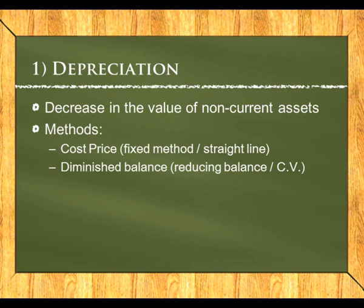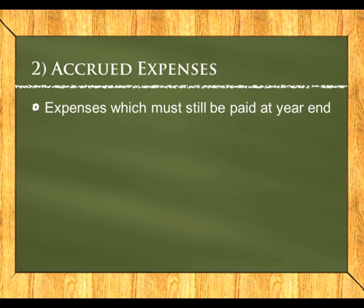The second method is the diminishing balance or reducing balance method, also called the carrying value method. It takes the cost less any accumulated depreciation already written off to get the carrying value, then multiplies that by the depreciation percentage. For example, cost R50,000 minus accumulated depreciation R10,000 gives carrying value R40,000; applying 10% gives depreciation of R4,000.